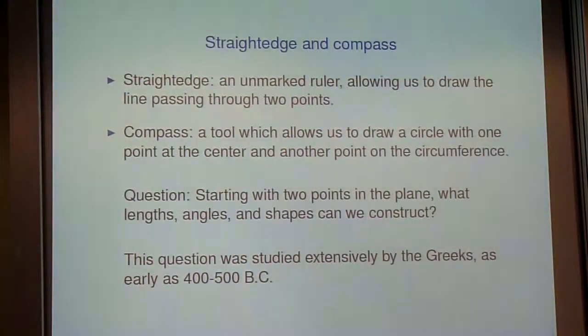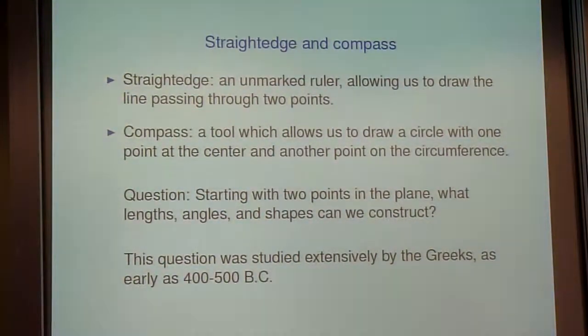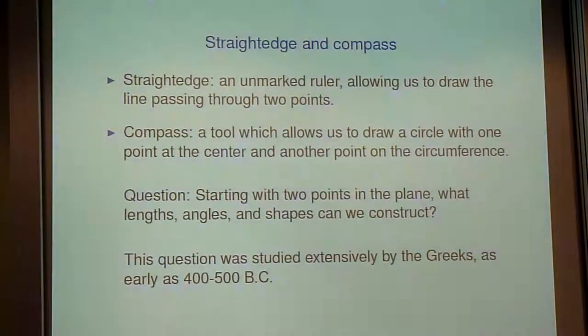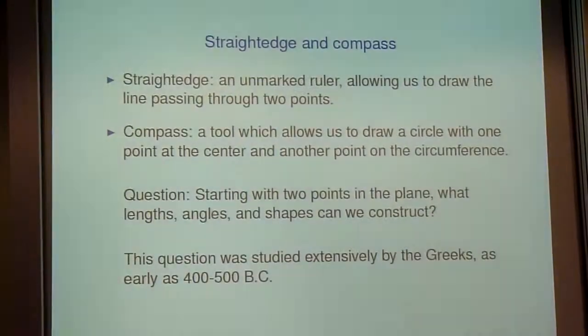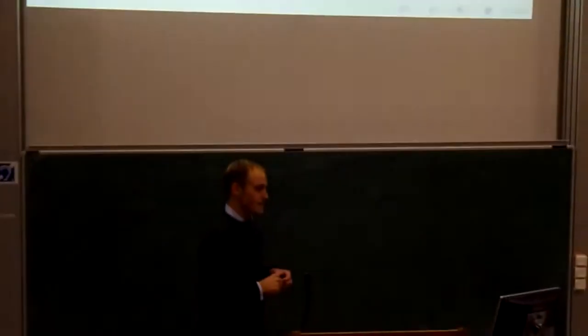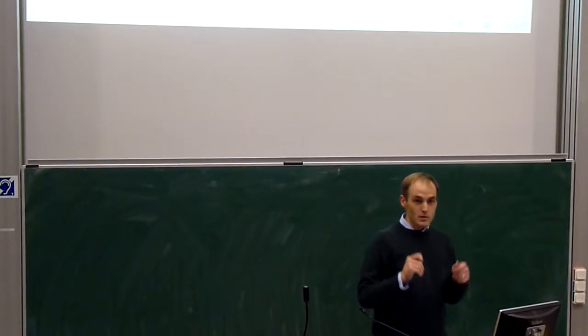A compass — and I don't mean the kind you use to find your way with maps and orienteering — is a tool which lets you draw a circle with one point at the center and another point on the circumference. You probably have seen these; at least when I was in school we used to use compasses. The basic question is: if you just start with two points in the plane, what lengths, angles, and shapes can you construct?